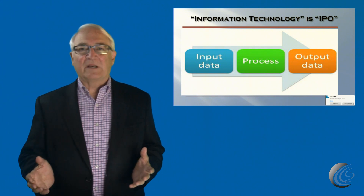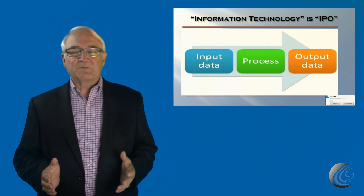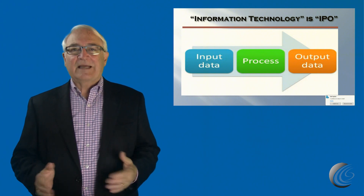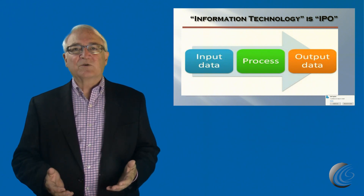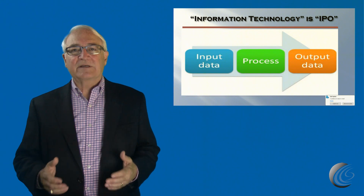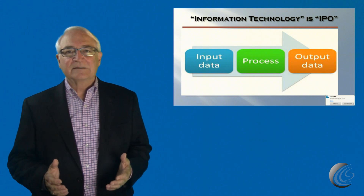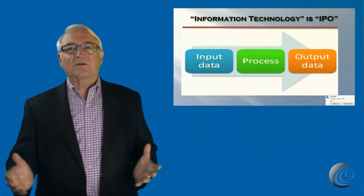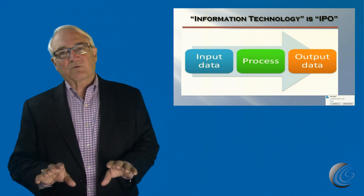Information technology — what really is it? Back years ago when I first got into the software industry, it was explained to me as simply being IPO: input, process, output. That's still what it is. There's input data that we bring into a process where we've built logic to manipulate the data and turn it into information. We take that information, store it, and call it output data. What we need in a cybersecurity program is quality controls around that entire process.